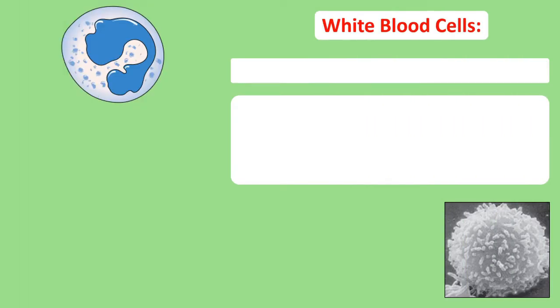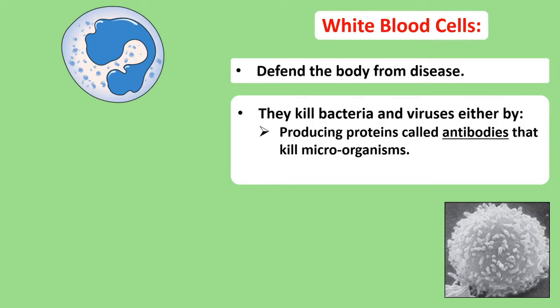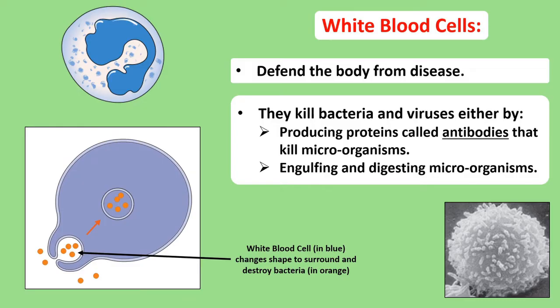Next are white blood cells. They're bigger than red blood cells and their job is to fight off disease by killing any microorganisms like bacteria or viruses that make their way into the blood. They can do this in two ways. Some white blood cells create proteins called antibodies and send these out to destroy germs. Other white blood cells can change their shape so that they completely surround or engulf germs, trap them and then kill them — we can use the term 'cell eating' to help remember this, as if the white blood cell has eaten the germs to get rid of them.